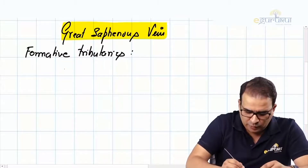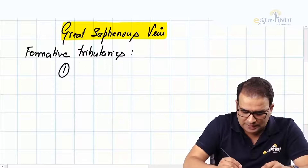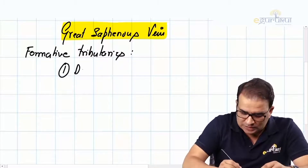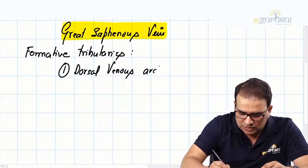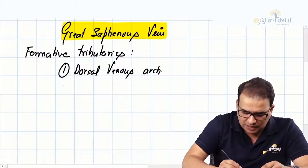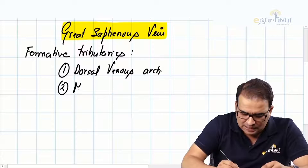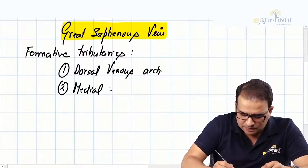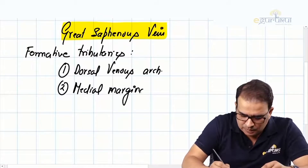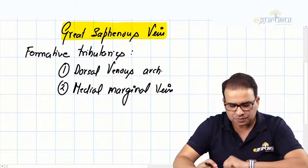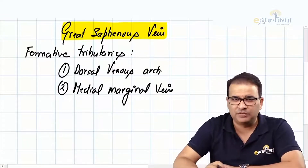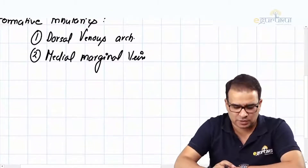The formative tributaries for the great saphenous vein: number one is the dorsal venous arch, and number two is the medial marginal vein. Let me tell you about these formative tributaries first and then we'll look into the rest.